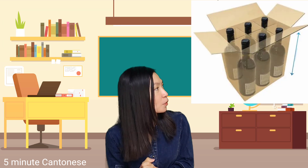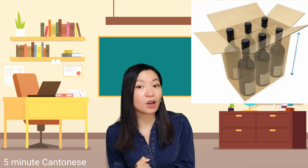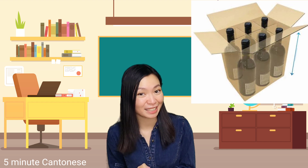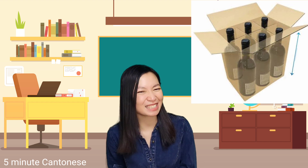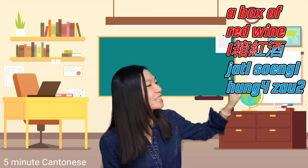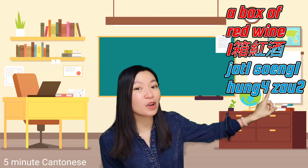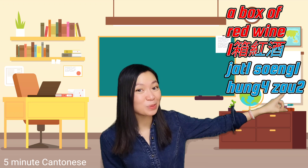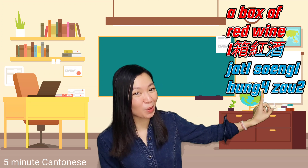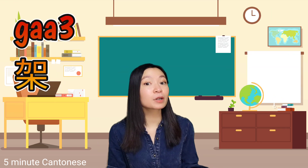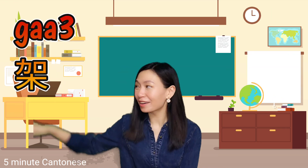Let's see one more example: a box of red wine. How to say it? Pretty easy: 一箱紅酒。